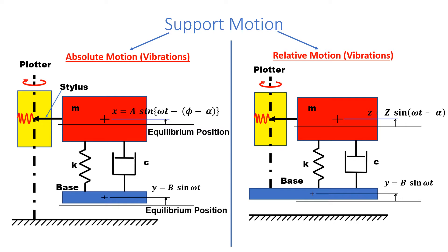In design problems where the support is moving, or the problems of support motion, we divide the problems into two types. First is where we note the absolute motion of the suspended mass, or absolute vibrations of the mass with reference to a common datum. In the second problem, we measure the relative motion of mass with respect to the support or the base, or relative vibrations of the mass.